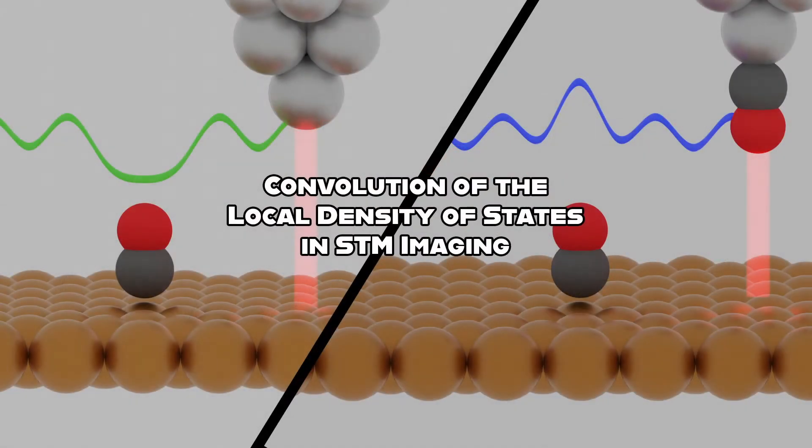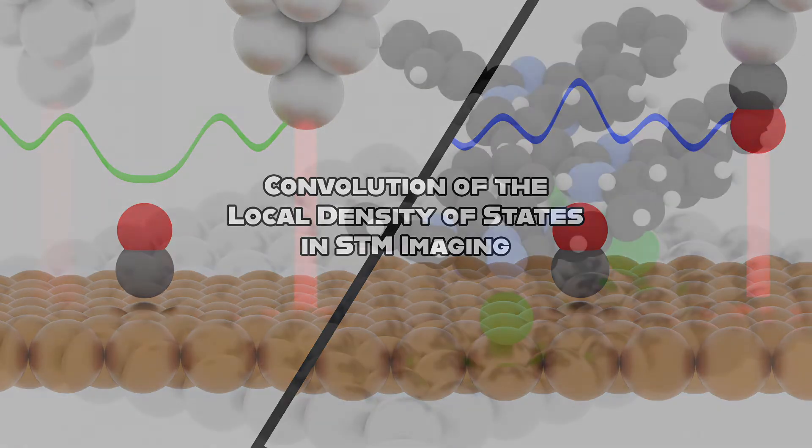It is important to note that although STM images appear topographic in nature, the apparent heights are a consequence of the variations in the local density of states, which are a convolution of the electronic states of the tip, surface, and any adsorbed species.